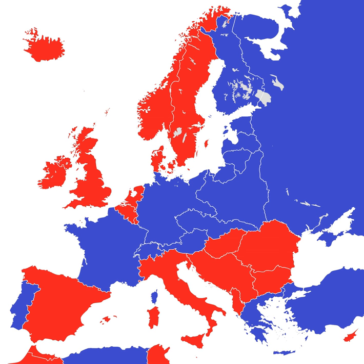This is referred to as a constitutional republic or representative democracy. As of 2017, 159 of the world's 206 sovereign states use the word republic as part of their official names. Not all of these are republics in the sense of having elected governments, nor is the word republic used in the names of all nations with elected governments.